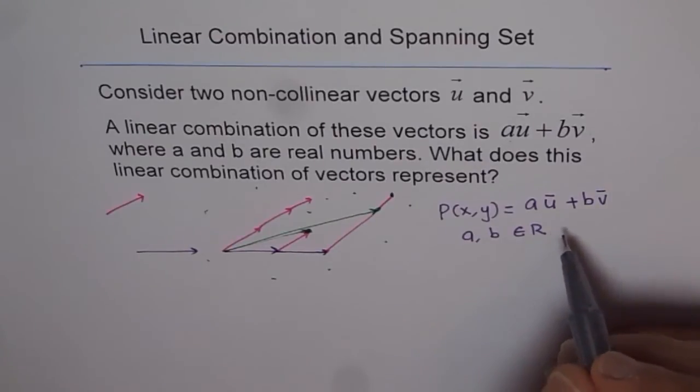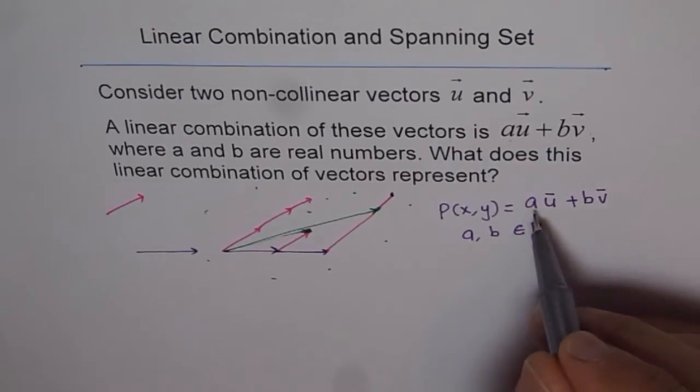What are the restrictions on u and v, and the restrictions on a and b? a and b should be, both should not be 0, one of them could be 0.